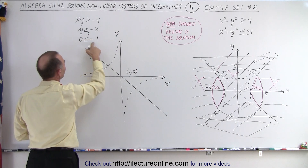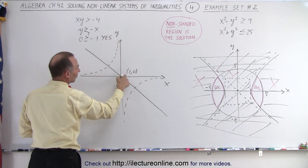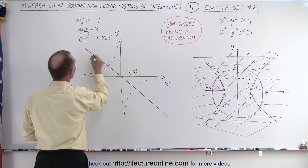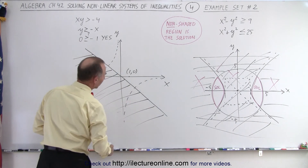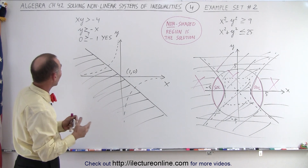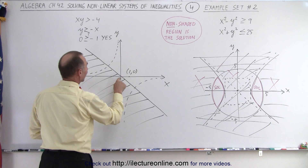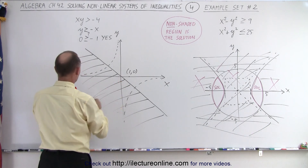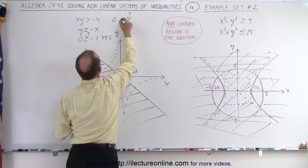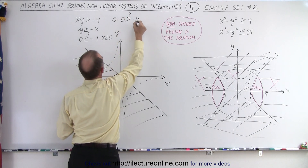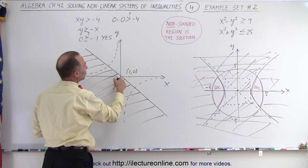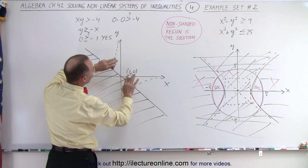Is 0 greater than negative 1? The answer is yes, which means we picked the test point in the correct region. That means the other region is not valid, so we shade away the other region. Now for the y equals 1 over x function — let's plug in test point (0, 0). Is 0 times 0 greater than negative 4? Yes, 0 is greater than negative 4. So I picked a point that's part of the solution, which means the other regions are not part of the solution.